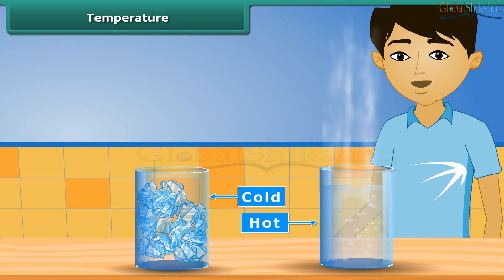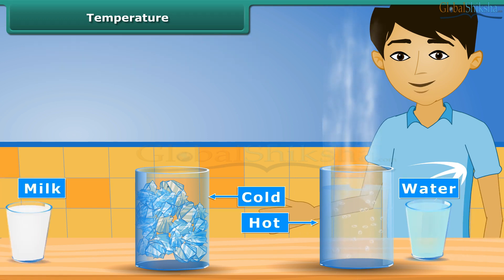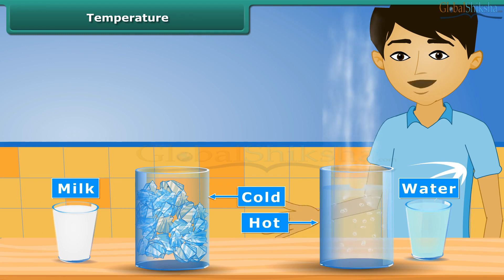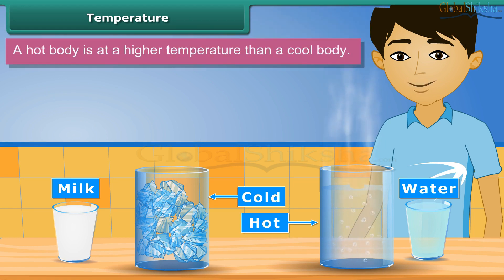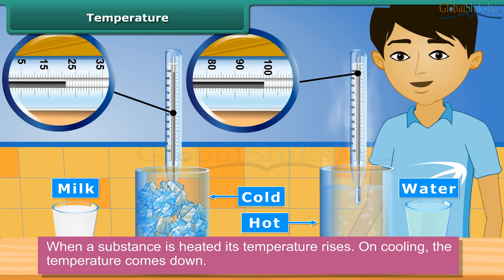Now we will learn the concept of temperature. Temperature is the measurement of hotness or coldness of an object. We say that water from the fridge is cold and milk is hot. How much cold is the water — is it cooler than ice? How much hot is the milk — is it hotter than boiling water? For this we need a measure. A hot body is at a higher temperature than a cool body. When a substance is heated, its temperature rises; on cooling, the temperature comes down. The degree of hotness or coldness of a body is described as its temperature.